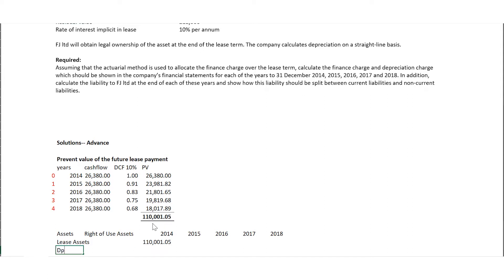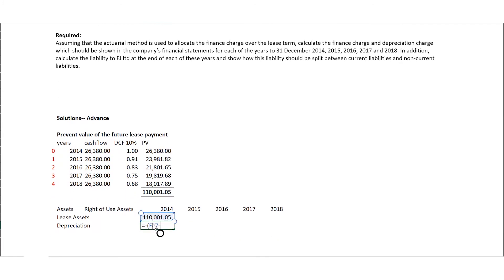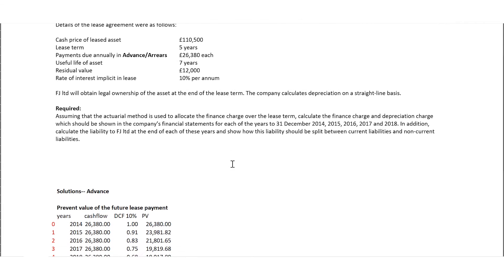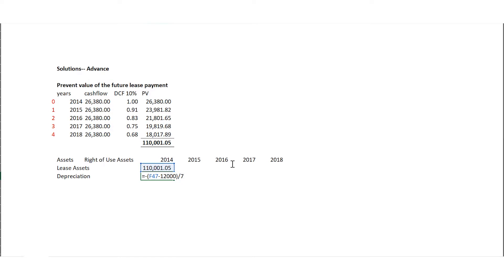The depreciation will be: open bracket, this figure minus the residual value — the question has given us the residual value to be 12,000 — close bracket, divided by — and here's something interesting — the lease term is five years but the useful life is seven years, and FJ will obtain legal ownership of the asset at the end of the lease term. Because it's going to obtain legal ownership, we depreciate using the original useful life of seven years, not the lease term. So we divide by seven, and that gives us the depreciation figure.